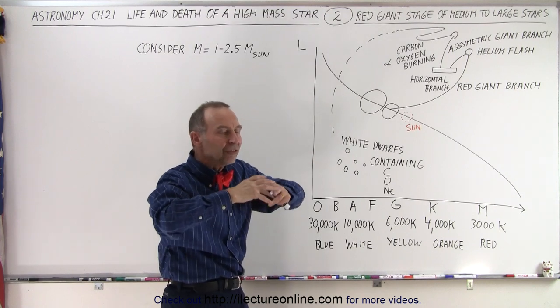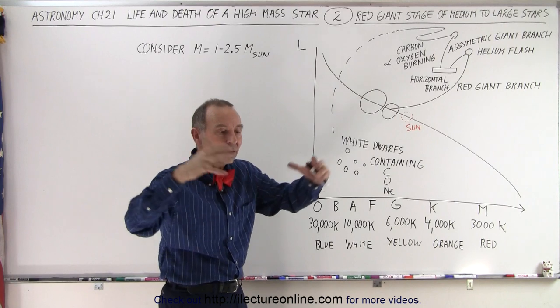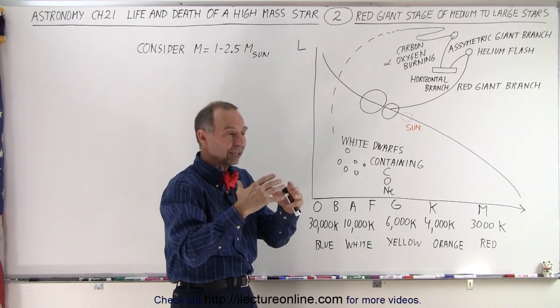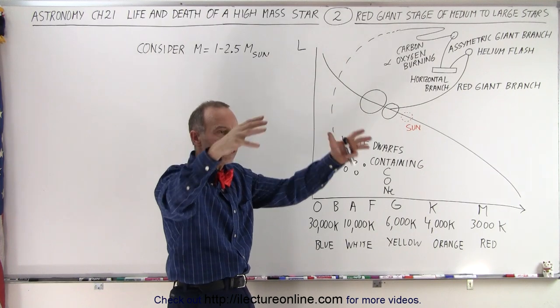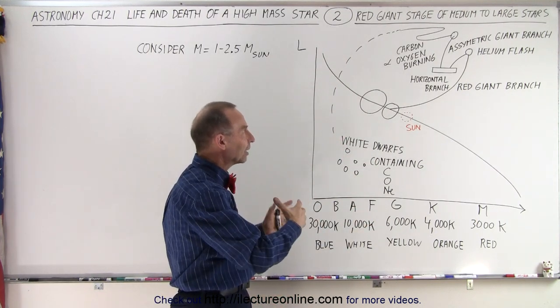Towards the end, the star begins to swell up again in size, as the core begins to run out of helium, so the core begins to collapse, again generating additional heat, additional temperature, and then the shell around that begins to convert helium into carbon.